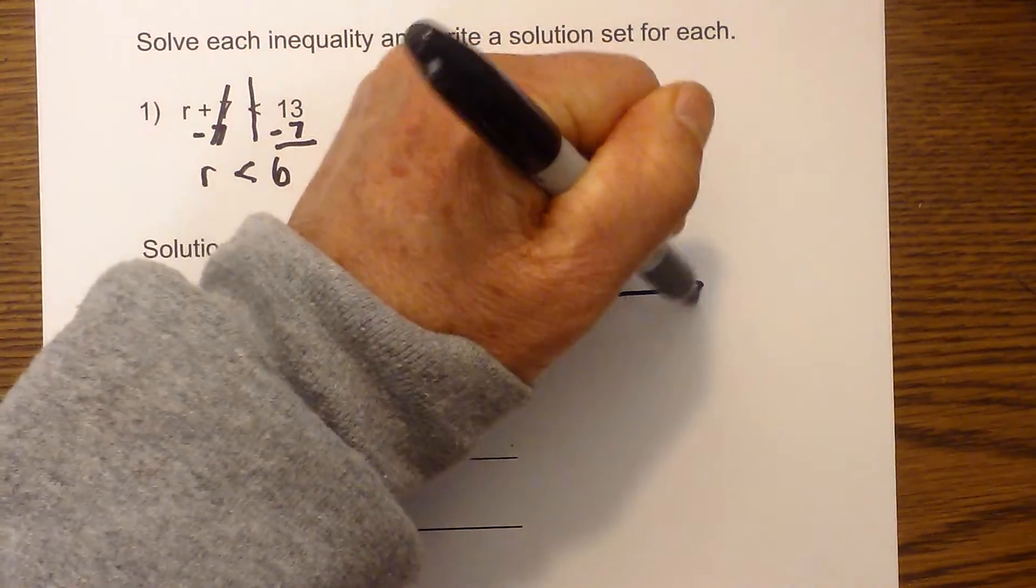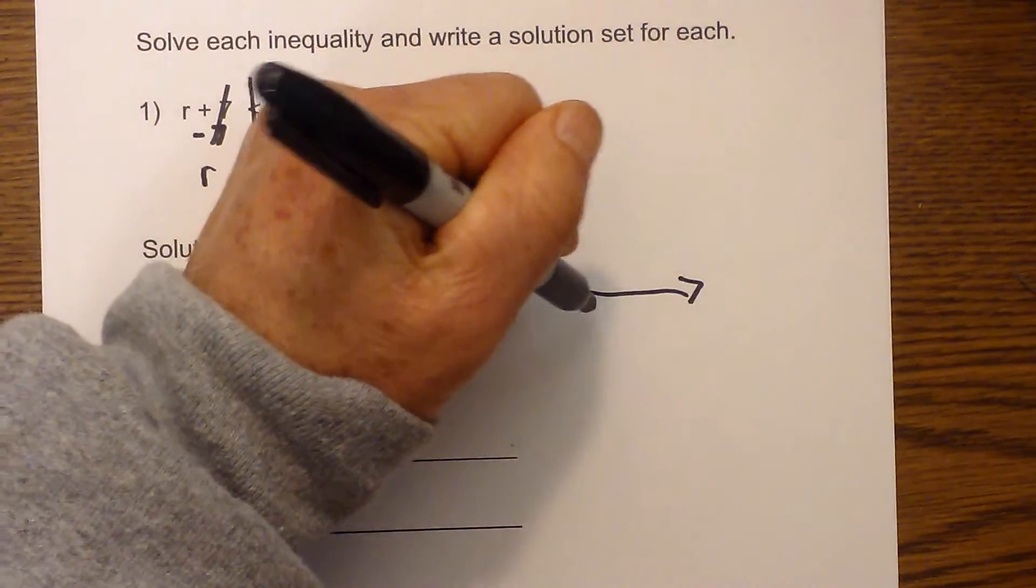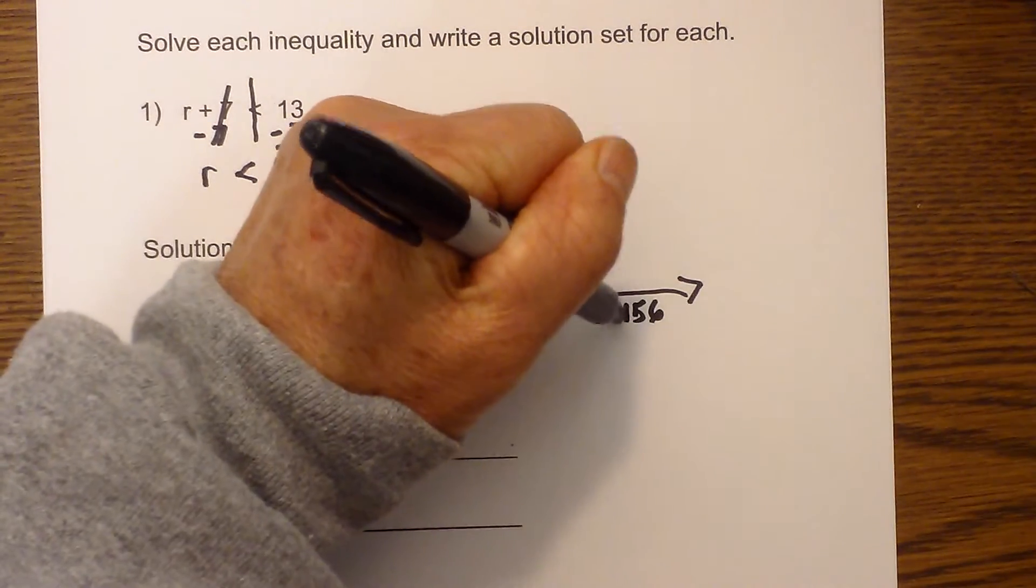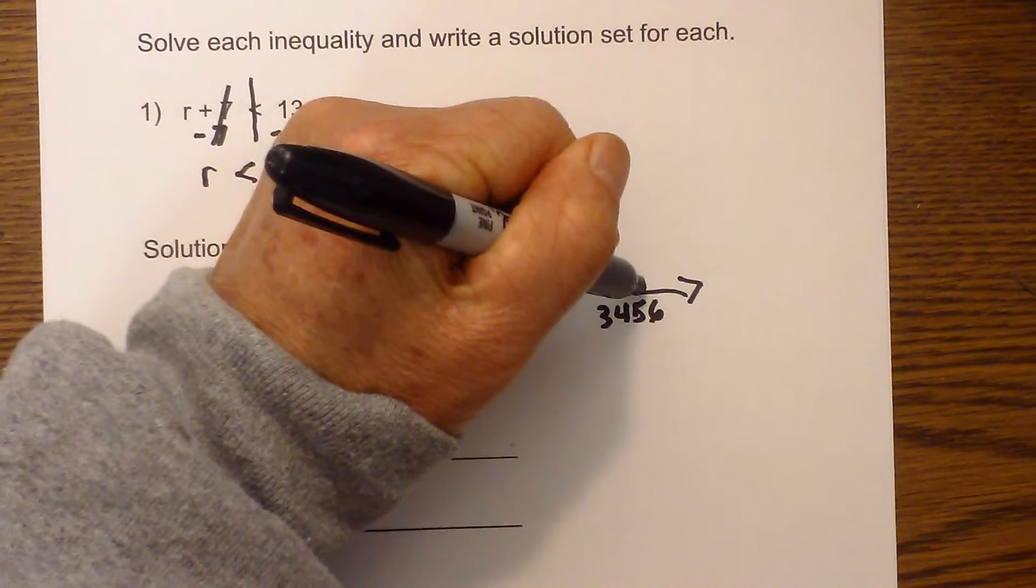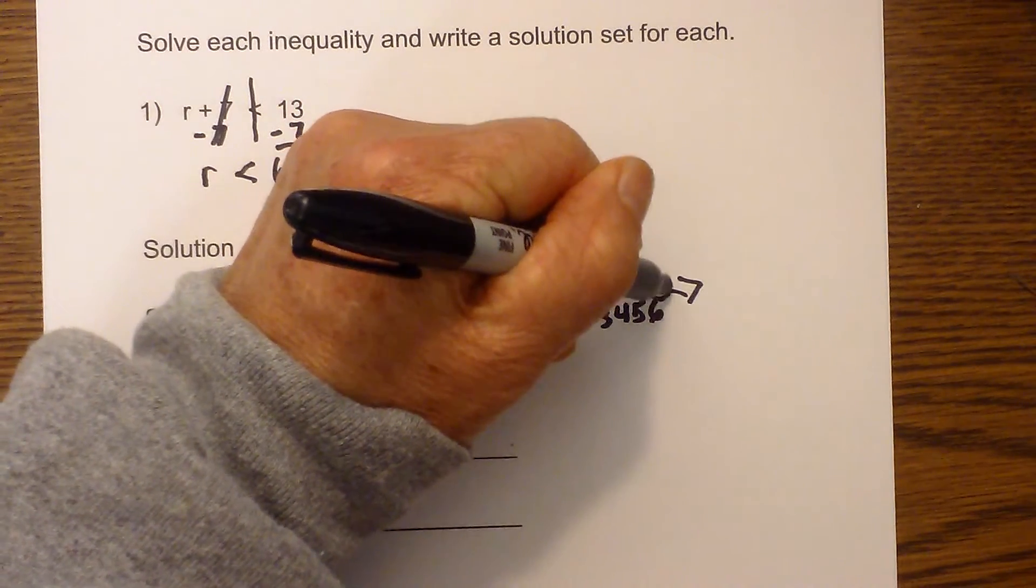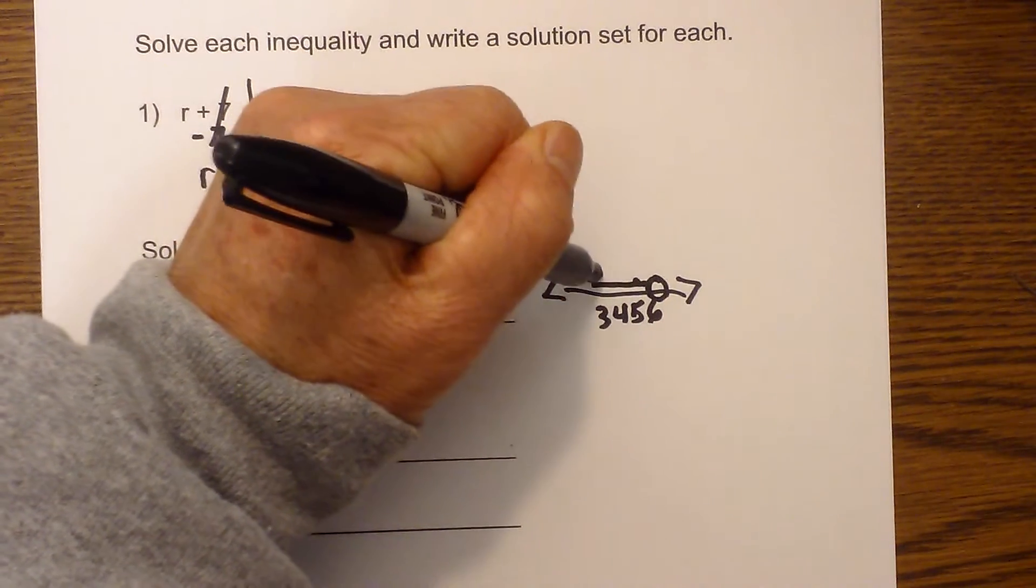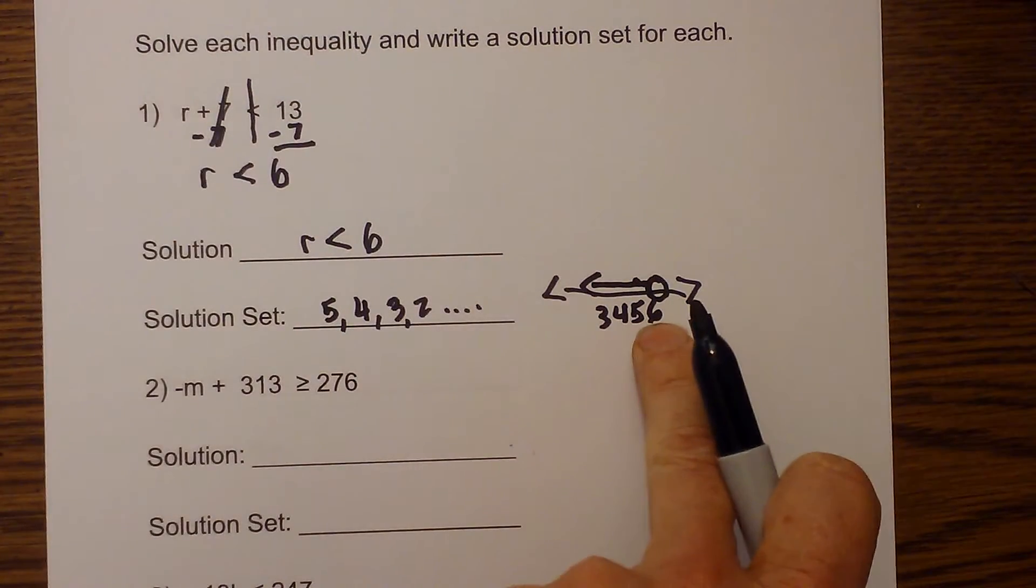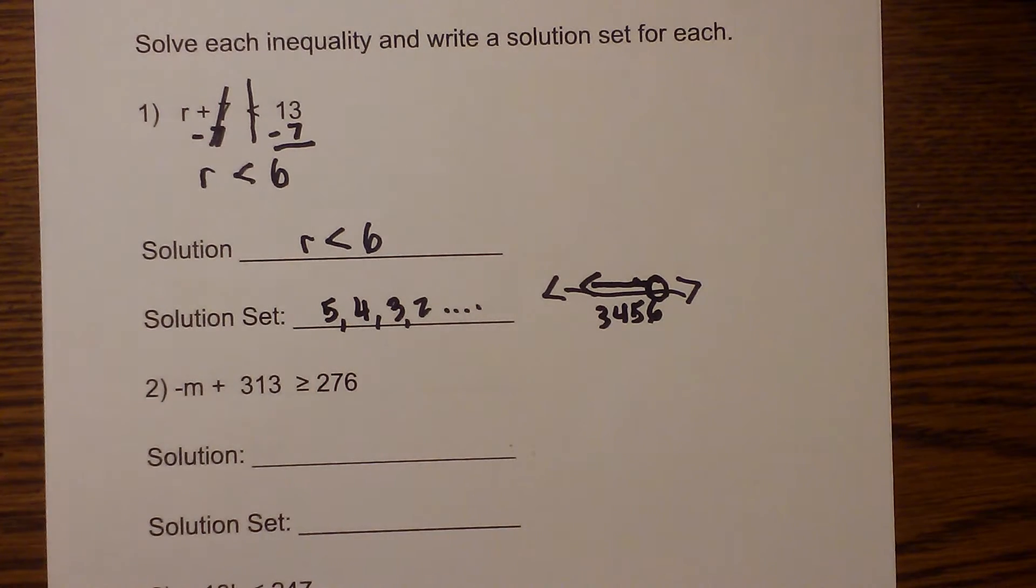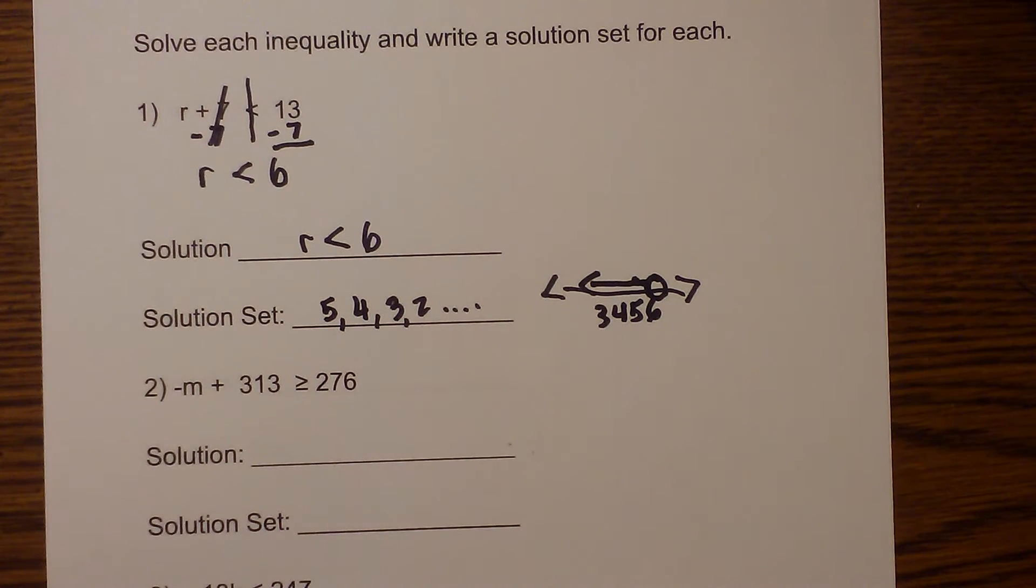If we put it on a number line, we would go 6, 5, 4, 3. So it would be less than 6. And notice that the dot is not filled in, meaning that 6 is not included in the solution. So it would be less than 6.